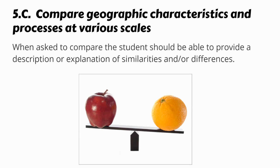5c: compare geographic characteristics and processes at various scales. The verb 'compare' is a little more complicated than a one-to-two sentence summary. When you're comparing, you want to first provide a description or explanation of each thing, and then do your comparison. You don't want to overwrite, but you don't want to underwrite either — make sure you are addressing both things being compared.